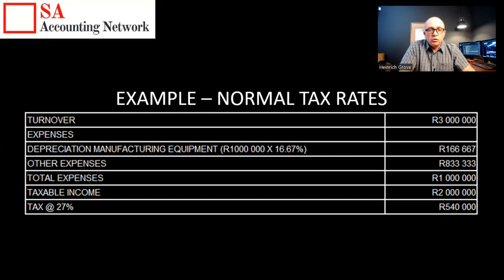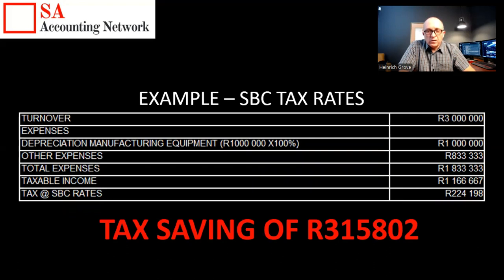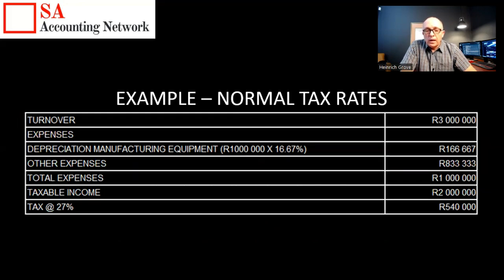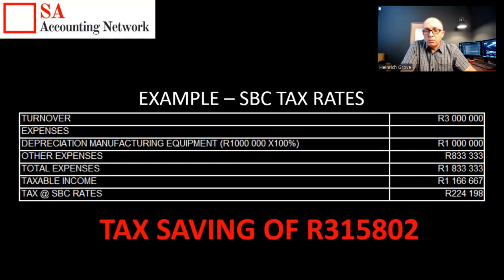Now let's look at the same example using faster depreciation rates. Turnover is still R3 million, but this time the depreciation on manufacturing equipment uses the 100% write-off in the year of purchase, so that expense jumps from R166,000 up to R1 million. With other expenses of R833,000, total expenses become R1.83 million, giving a taxable income of R1.16 million. Applying the Small Business Corporation tax rates, the tax is now R224,000. Compared to R540,000 previously, that's a tax saving of R315,000.